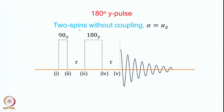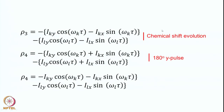As before, we will first consider two spins without coupling, which means the Hamiltonian is simply Hz, which is the Zeeman Hamiltonian. The evolution happens in the same manner here under the influence of the Zeeman Hamiltonian.